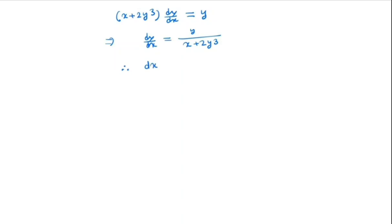From there what we will do? We will invert this. So we have dx/dy is equal to (x + 2y³)/y.